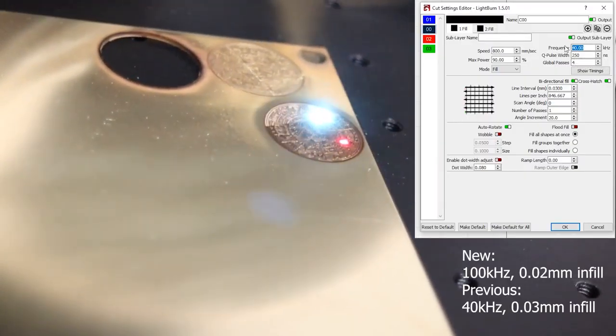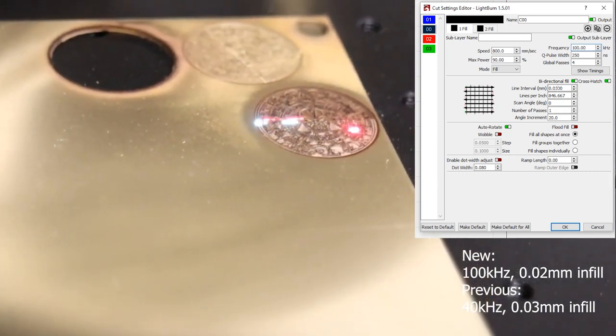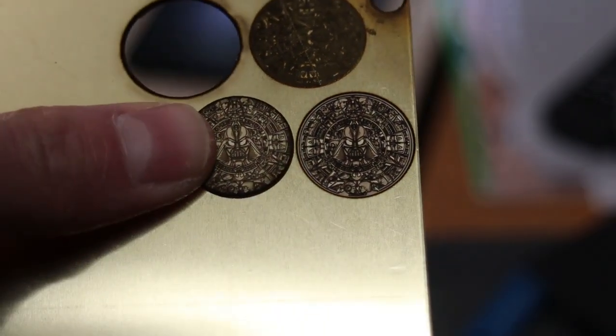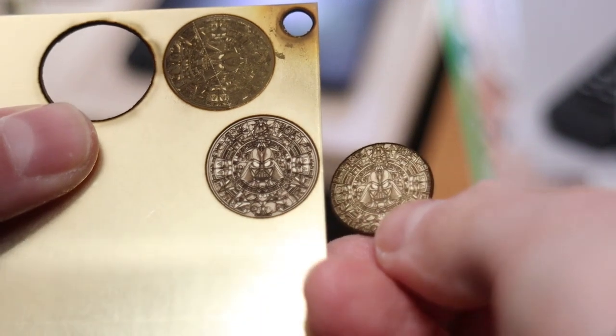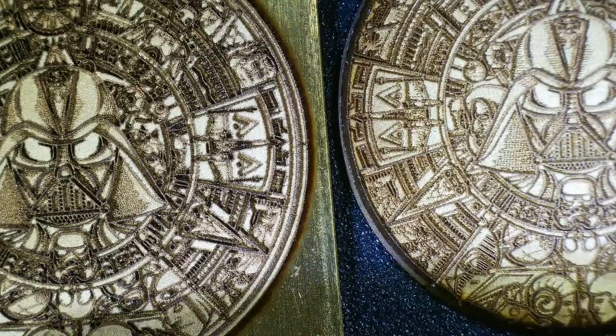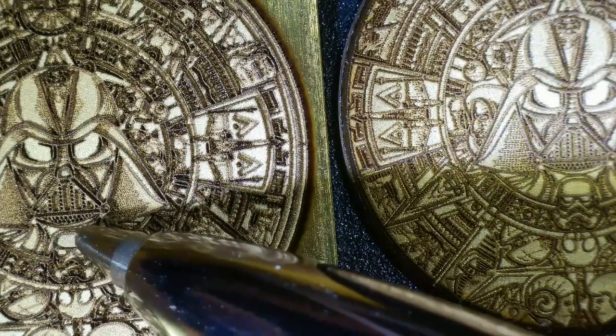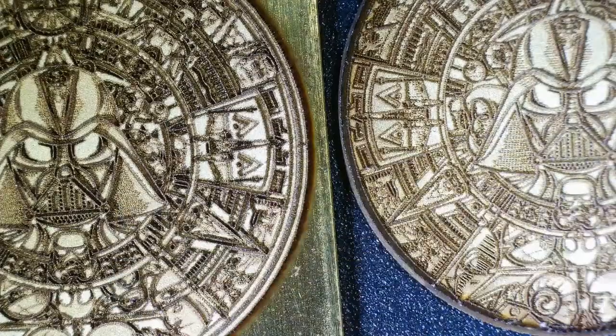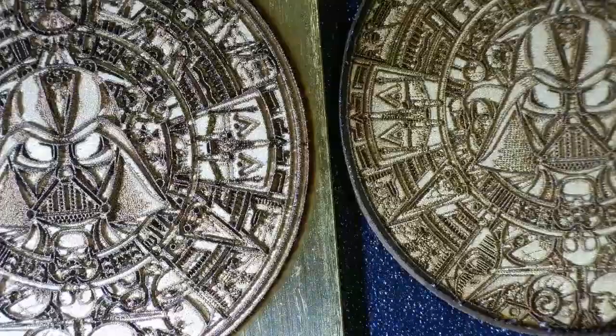I engraved it again using higher frequency and more dense infill. I didn't bother cutting it out, so I can easily differentiate the two. Just by looking at them, we can see that the newer settings have resulted in more contrast. Looking under the microscope, we can see that the newer settings have produced smoother engravings with incredible level of detail, and are just as deep as before if not even more. If the settings were tweaked further, you could produce even better results.